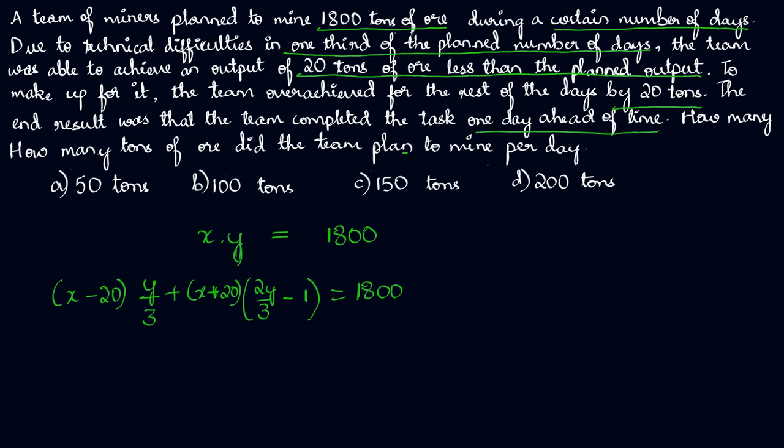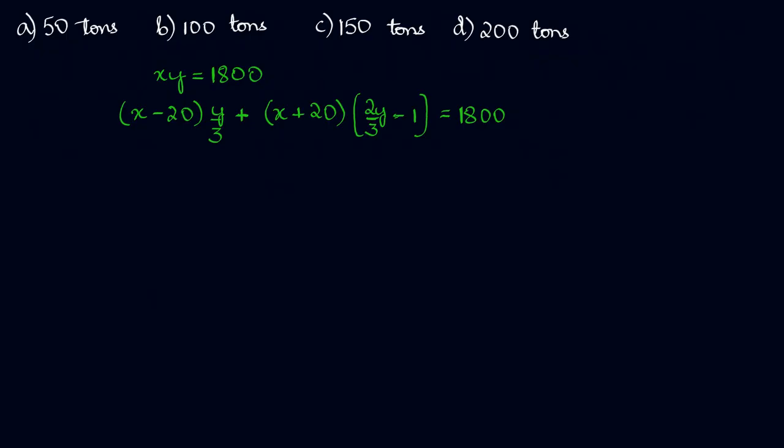Sorry, there's a glitch in the question. How many tons of ore did the team plan to mine per day? We need to find the mystery x here. All right, we have the two equations. We'll take it forward and see how we can go about this. So we have xy equal to 1800, and x minus 20 times y by three plus x plus 20 times two y by three minus one equals 1800. Both of these are equal, so let's just expand this guy out.